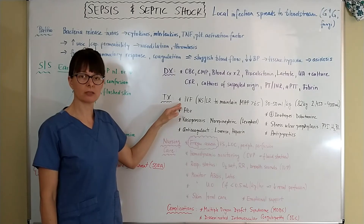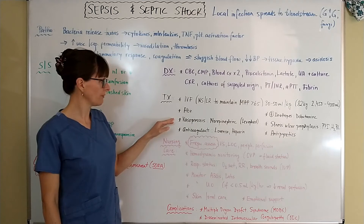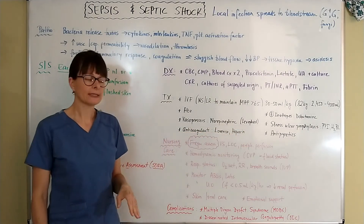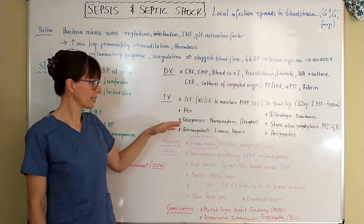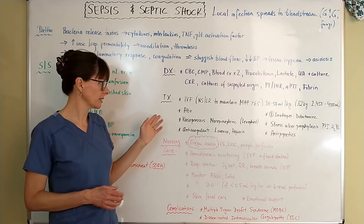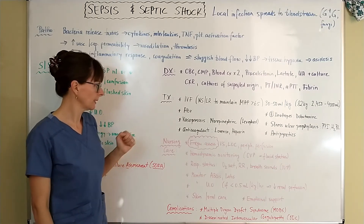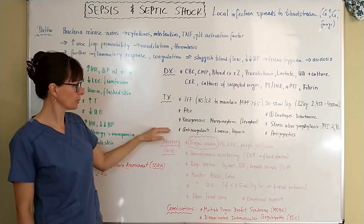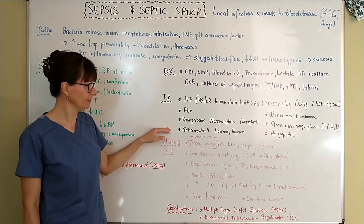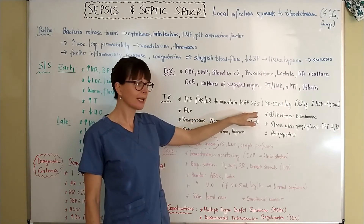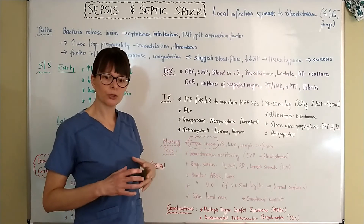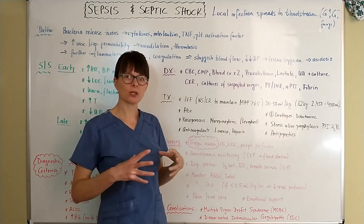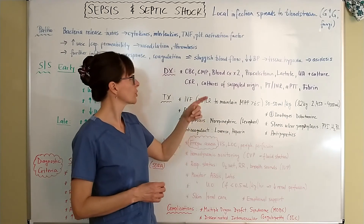The most commonly used vasopressor currently is norepinephrine, also called Levophed, which is the standard first-line vasopressor for septic patients. Because of platelet activation, thrombosis, and coagulation, we also want to place the patient on anticoagulants such as Lovenox or heparin. Sometimes the patient's heart will need support to improve contractility — a positive inotrope such as dobutamine helps improve the contractility of the heart to improve cardiac output, which in turn helps with blood pressure.